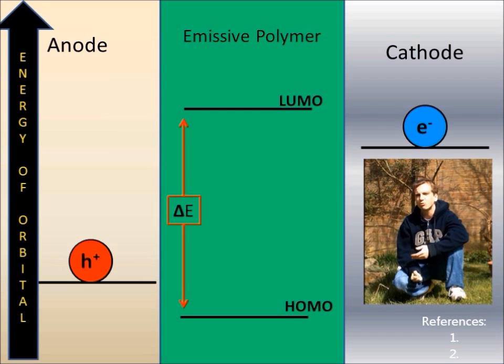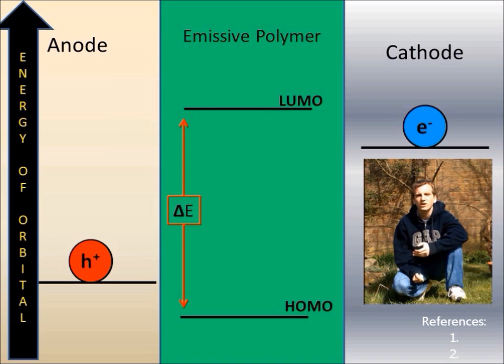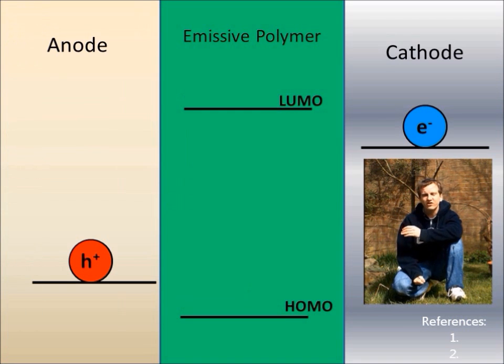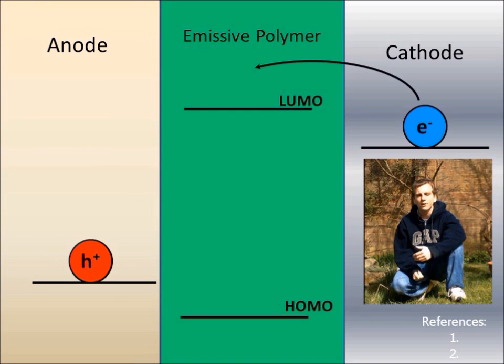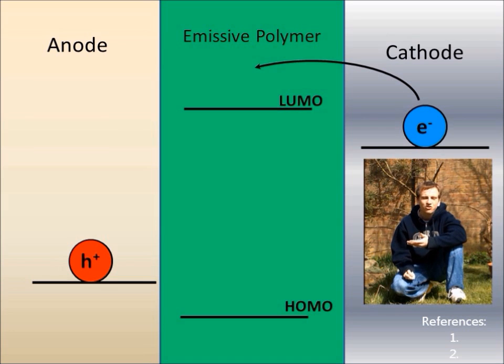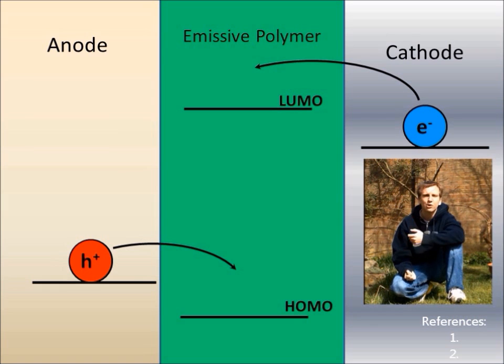The simplest of P-OLEDs would consist of an anode, a cathode, and the electroluminescent polymer sandwiched between the two. The cathode injects electrons into the LUMO of the emissive polymer, whereas the anode removes electrons from the HOMO of the emissive polymer, even though we prefer to think of this as the injection of an electron hole, the absence of an electron. This sees our emissive polymer in an excited state. There's an electron occupying the LUMO, and it could be occupying the HOMO.